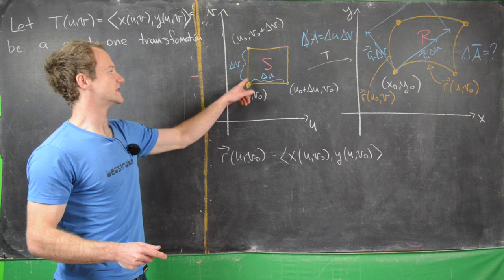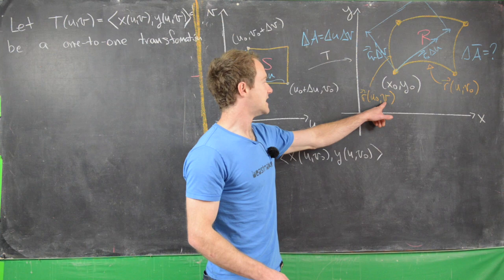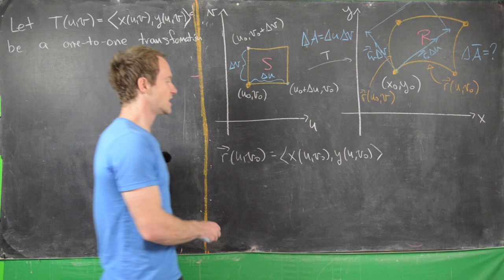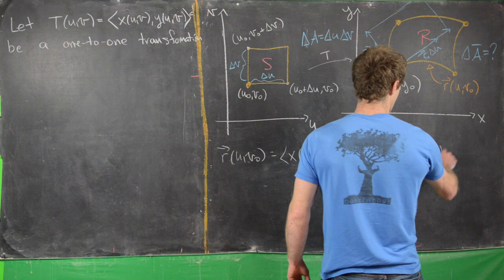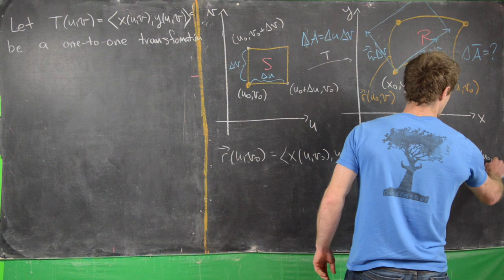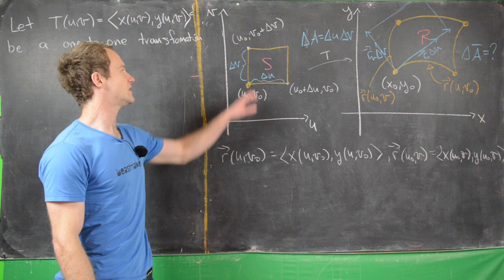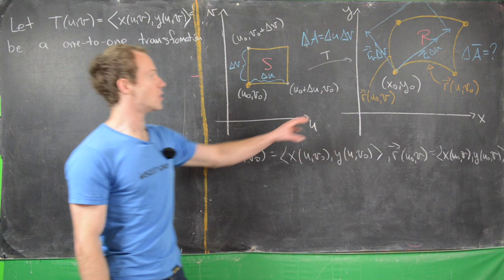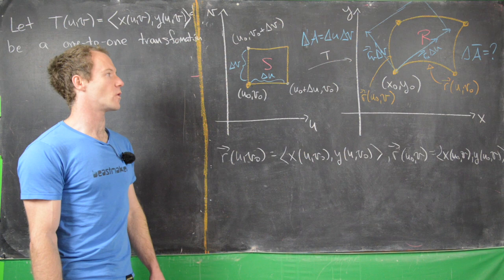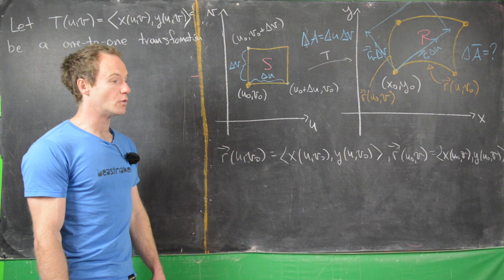What about the leftmost edge? The leftmost edge is what you get when you set u equal to the constant u₀ and let v vary. So r(u₀, v) is given by (x(u₀, v), y(u₀, v)) — that's the curve on the left edge. You can think about what the top and right edge curves are as well. Our goal is to find the area of the region R bounded by those four orange curves.